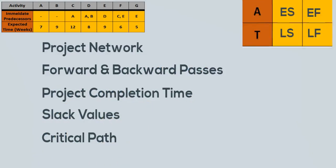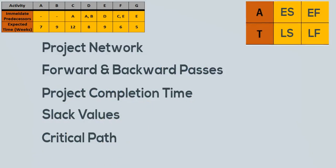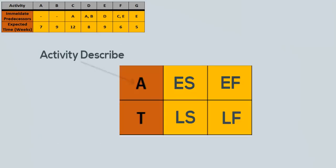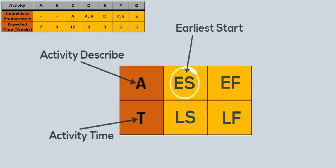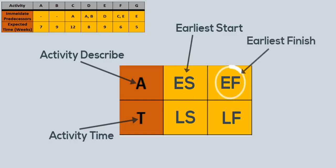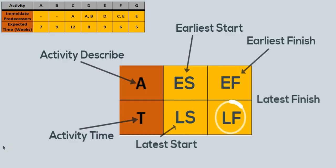I will be using this node convention as you will find in quantitative methods. A is the activity being described, and T represents the expected activity duration or time. ES is the earliest time when the activity can start. EF is the earliest finish time. LS is the latest start time, and LF is the latest finish time without extending the minimum completion time of the project.